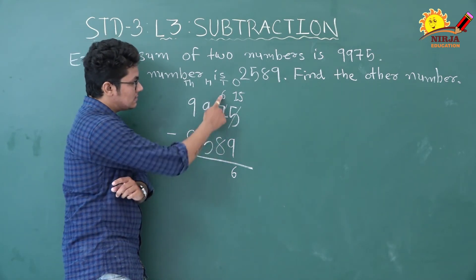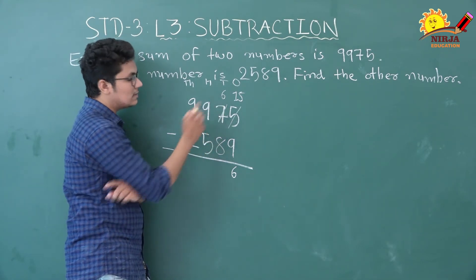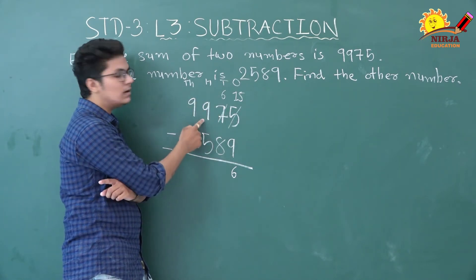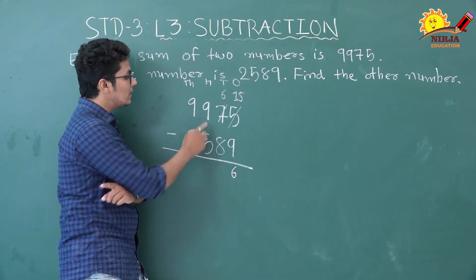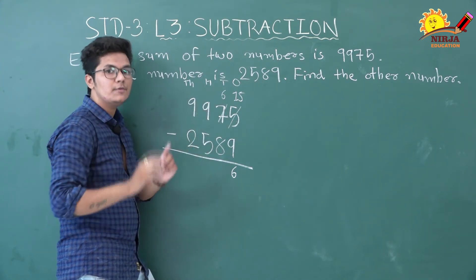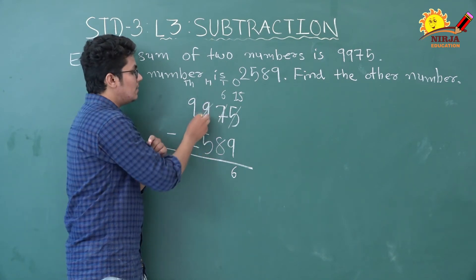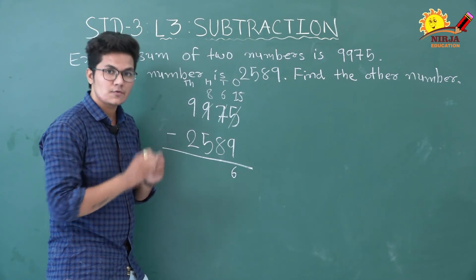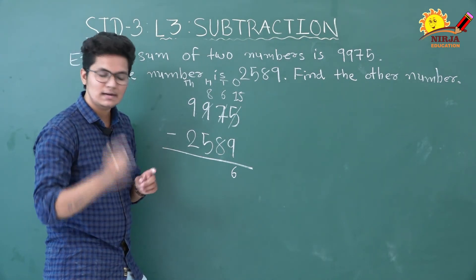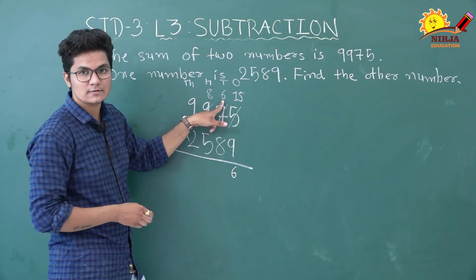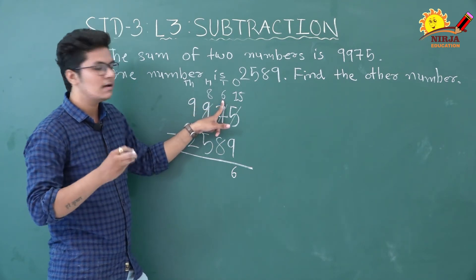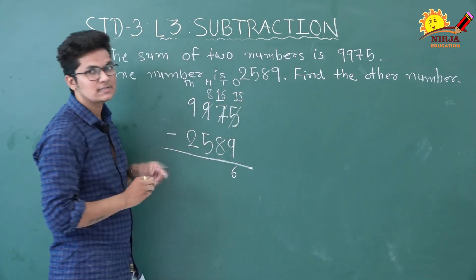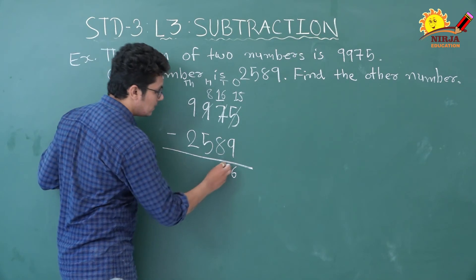Now tens column: 6 minus 8. Again 8 is greater than 6, so we cannot subtract. We borrow 100 from the hundreds column. There are 9 hundreds, so after borrowing we have 8 hundreds left. We use that 100 in the tens place: 100 equals 10 tens, and there are already 6 tens, so now 16 tens. 16 minus 8 is 8. Now hundreds column: 8 minus 5 — since 5 is less than 8, we can subtract directly. 8 minus 5 is 3.